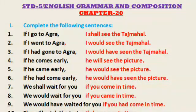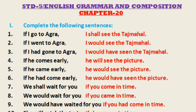Let us discuss the exercises. Complete the following sentences. Number 1: If I go to Agra, I shall see the Taj Mahal. If I went to Agra, I would see the Taj Mahal. If I had gone to Agra, I would have seen the Taj Mahal. Number 4: If he comes early, he will see the picture. Number 5: If he came early, he would see the picture. Number 6: If he had come early, he would have seen the picture.